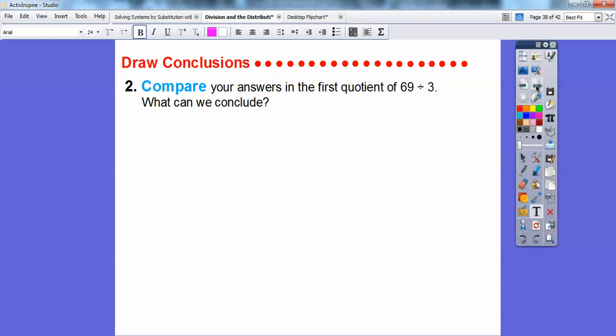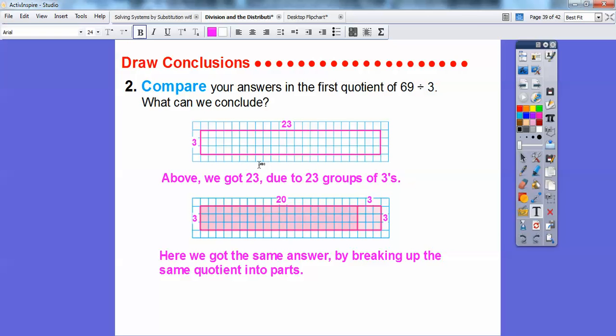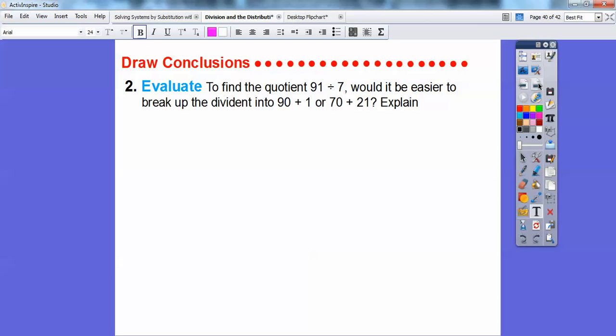Compare your answer in the first quotient of 69 divided by 3. Well, we got the same thing, you guys. Above, we got 23 due to the 23 groups of 3. Here we got the same answer, but we broke up the quotient from 69 to being 60 plus 9. And so here's my 60 squares, and 60 divided by 3 is this 20. And here's my 9 squares, and 9 divided by 3 is this 3, so 20 plus 3 is also 23 right there. All right, nice and easy, isn't it?